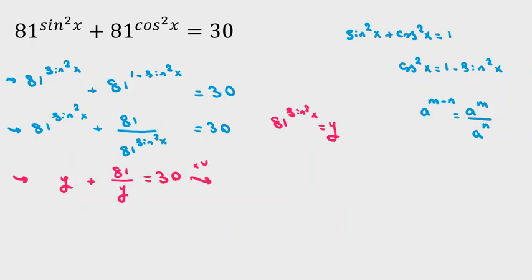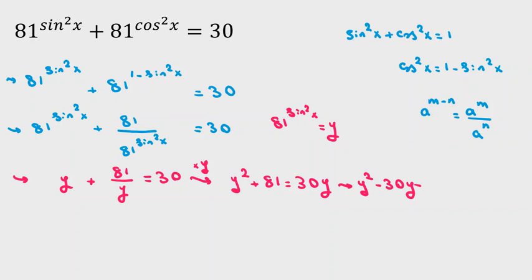We multiply both sides by y, giving us y squared plus 81 equals 30y. Taking everything to the left-hand side: y squared minus 30y plus 81 equals 0. This is a quadratic equation, which we can solve with the quadratic formula or by factoring.